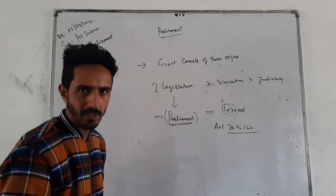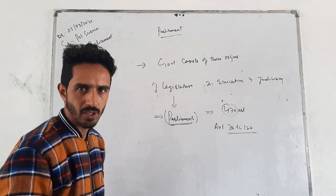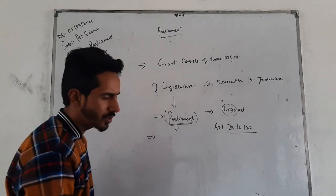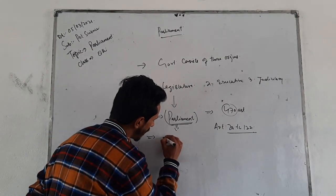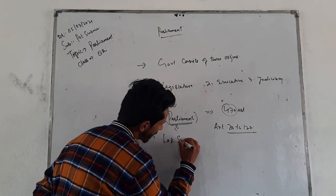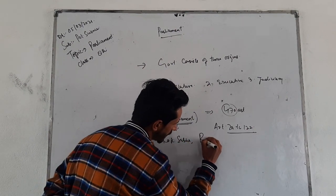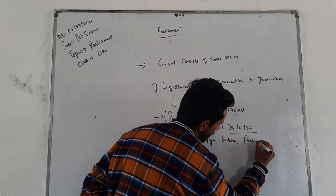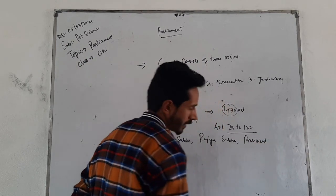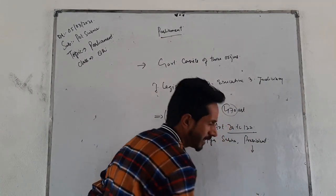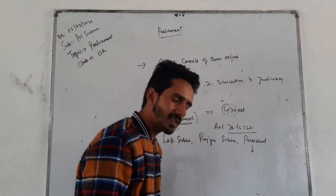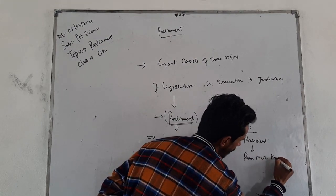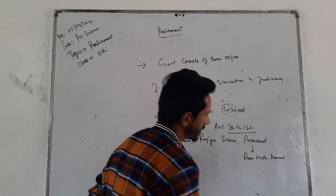So when we talk about Parliament, according to the Indian Constitution, Parliament consists of the Lok Sabha, the Rajya Sabha, and the President. The present President of India is Ram Nath Kovind.